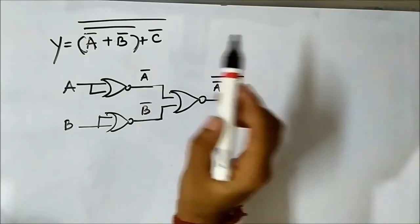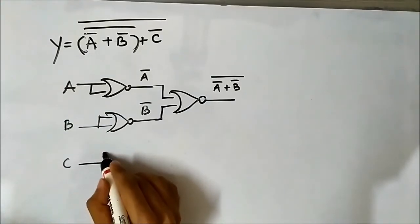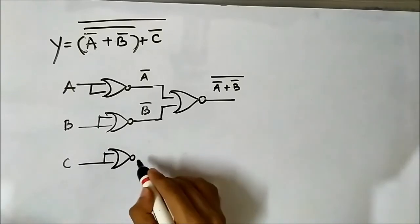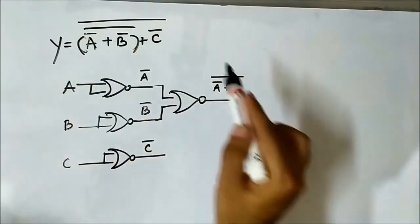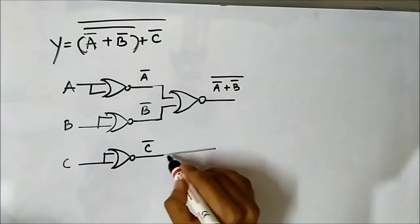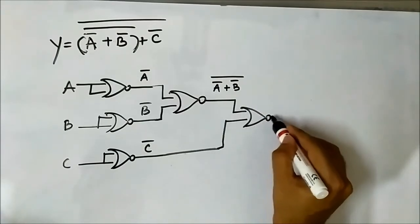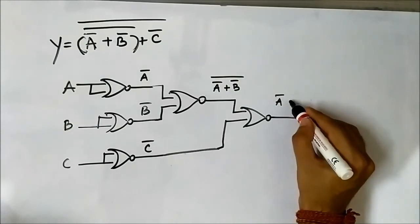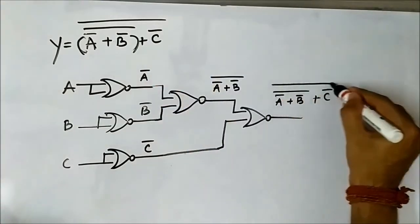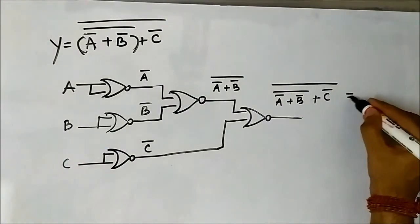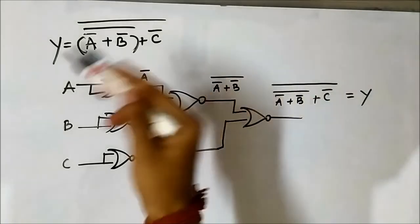This gives us (A complement OR B complement) whole complement. For C complement, signal C is passed through a two-input NOR gate to get C complement. Now, passing these two signals — (A complement OR B complement) whole complement, and C complement — through a NOR gate gives the required expression: (A complement OR B complement) whole complement OR C complement, whole complement. This is the required expression, and it requires five NOR gates in total.